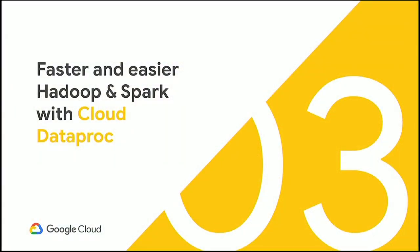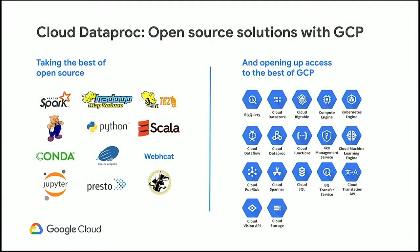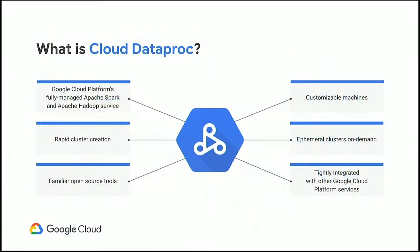I'd like to invite Chris to talk more about Hadoop and Spark in Google Cloud. Thanks. Hey everybody, I'm Christopher Crosby, a product manager on our open data and analytics team. I'm here to talk about how Spark and Hadoop combined with Cloud Dataproc can help you do processing on cloud-scale datasets. Our goal with Cloud Dataproc is to let you take the open-source tools, algorithms, and programming languages you're using today, but apply them to cloud-scale datasets while helping you integrate with the rest of the Google Cloud ecosystem. Cloud Dataproc is Google Cloud Platform's fully managed Apache Spark and Hadoop service.